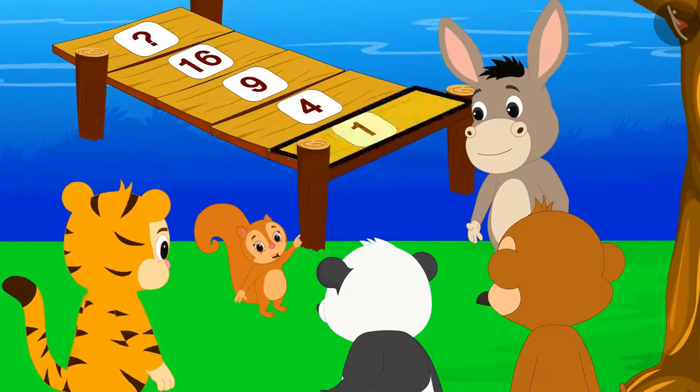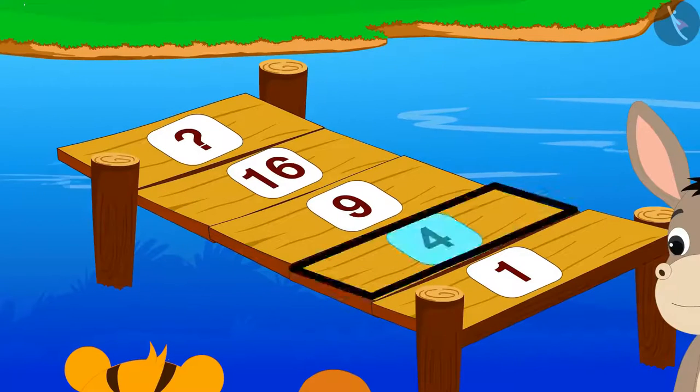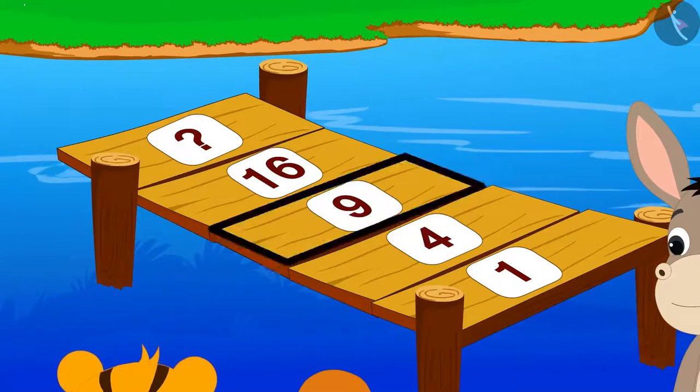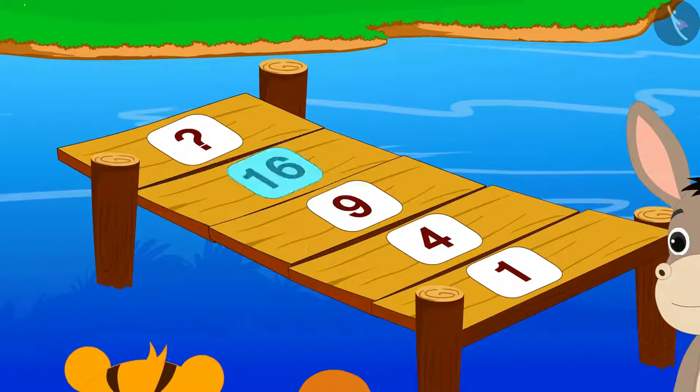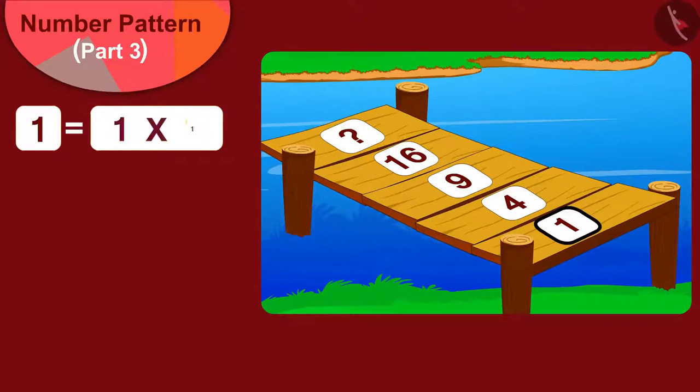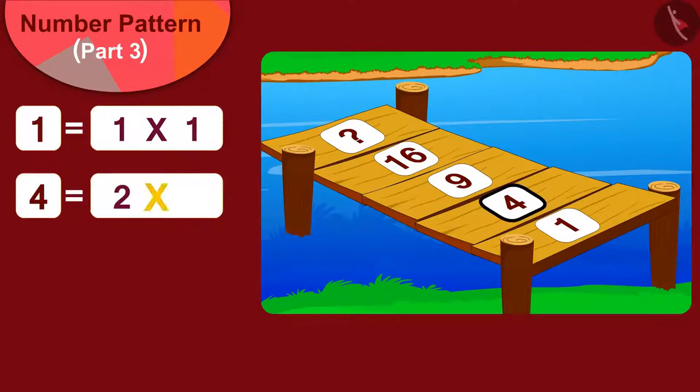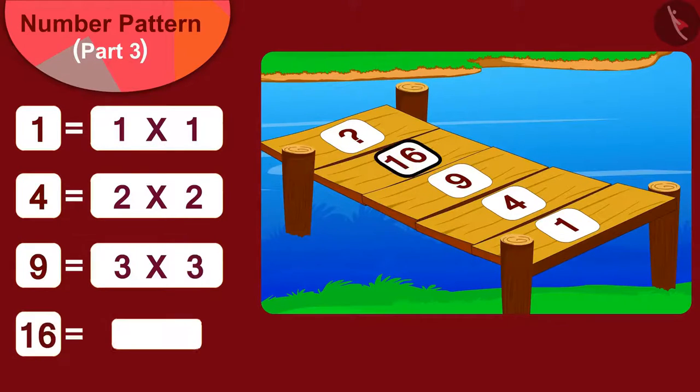One is written on the first plank of this bridge. Four is written on the second plank. Nine on the third plank. And sixteen on the fourth plank. We can write one as one times one, four as two times two, nine as three times three, and sixteen as four times four.